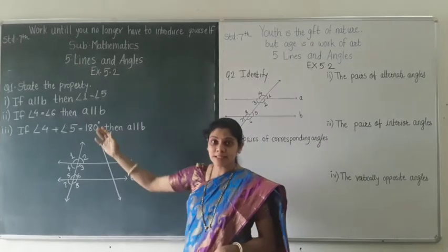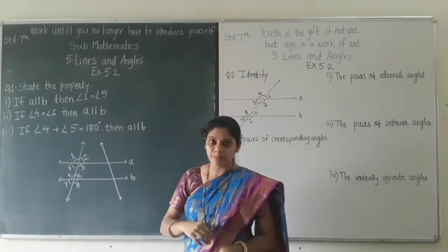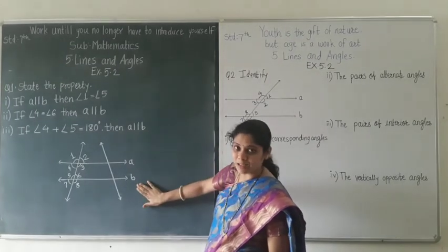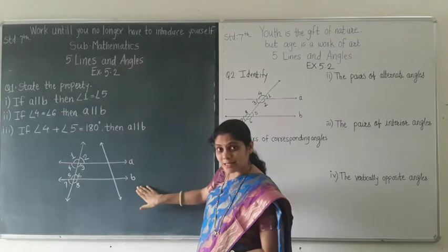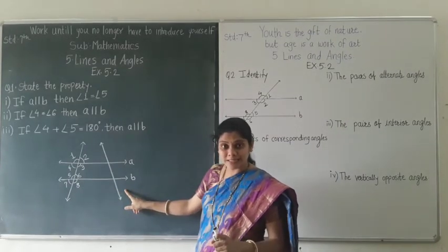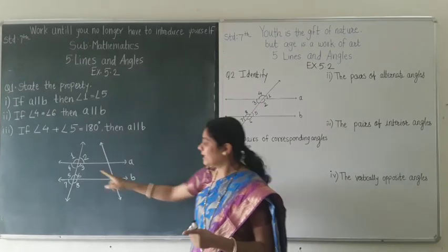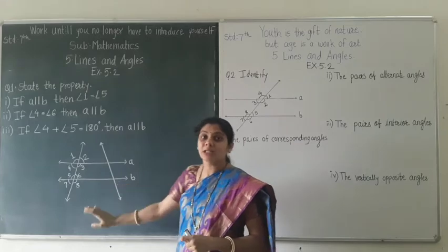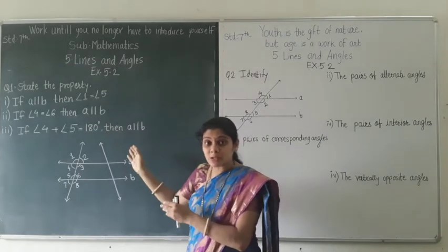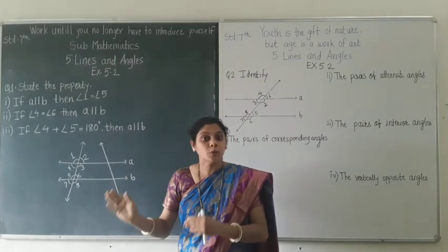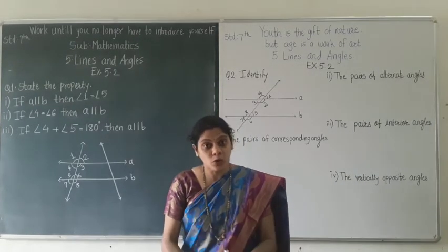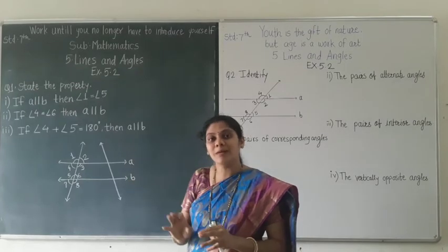Now look here. This is question one. We have to state the property, and this is the diagram. In this diagram you can see line A and line B — these are two lines intersecting at two distinct points. With the help of this diagram we have to solve these questions. These questions are in the form of statements, and to prove these statements we have to use some properties. We have to mention only the name of the property.